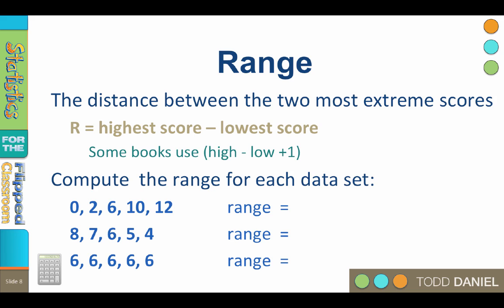Said more simply, range equals highest score minus lowest score. In some statistics textbooks, you will find a formula that the range equals the highest score minus the lowest score plus one. And there's a good reason to do that.